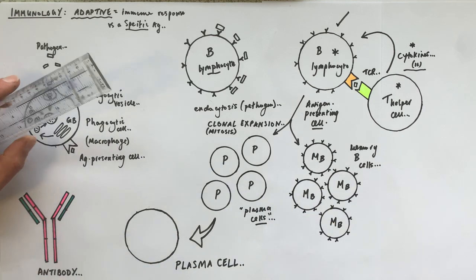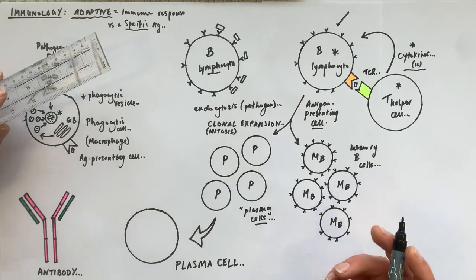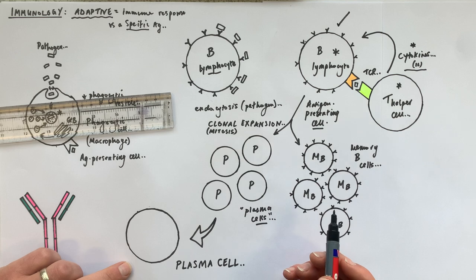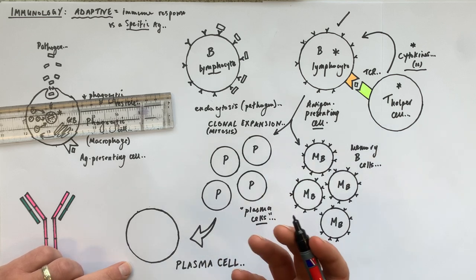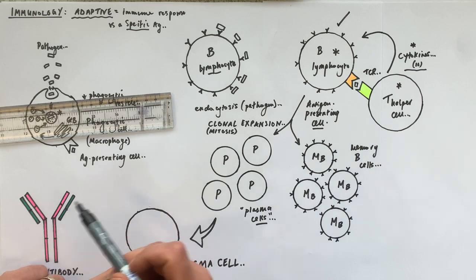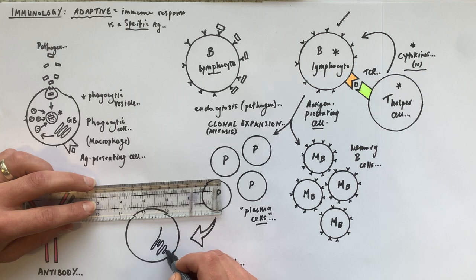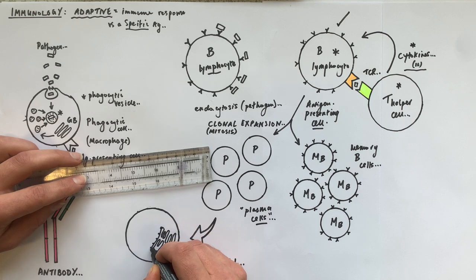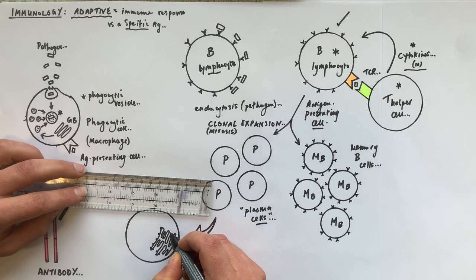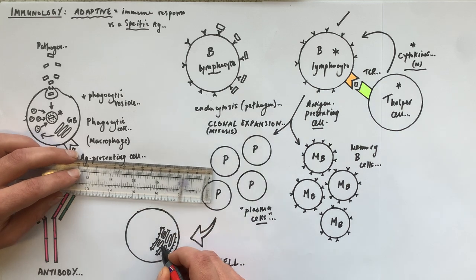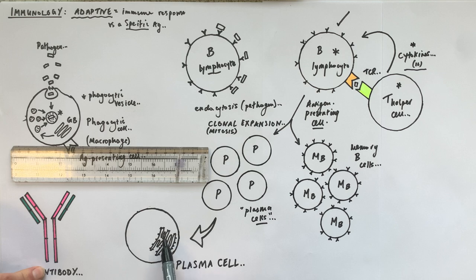The plasma cells' job is to make and secrete the antibody into the blood plasma or lymph fluid. To secrete a protein like an antibody, there needs to be lots of rough endoplasmic reticulum — rough ER — which has ribosomes attached to the outside surface. At those ribosomes, translation takes place to make the antibody proteins.